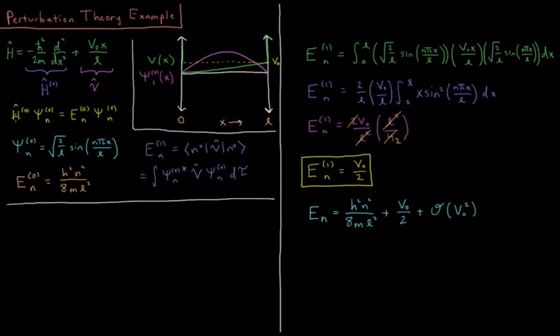We have our Schrödinger equation, our reference Schrödinger equation for our reference wave functions and energies: H0 ψ0(n) equals E0(n) times ψ0(n).